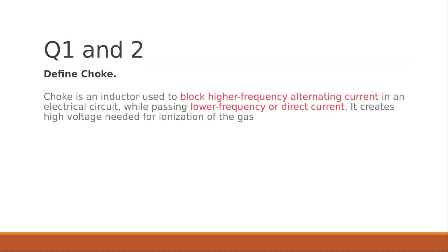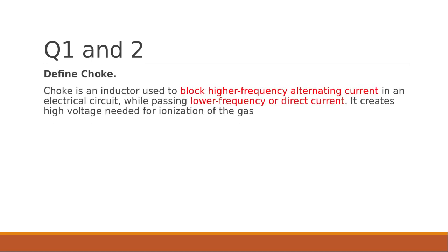Define choke. Choke is an inductor and it is used to block the high frequency AC — that is alternating current — in an electrical circuit, while it should also pass the low frequency or direct current. It also creates the high voltage which is needed for the ionization of the gas, which serves as the fundamental working principle behind the tube light and its glowing. So, the choke is a very simple inductor.